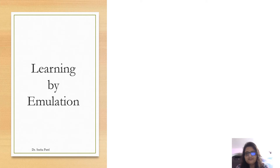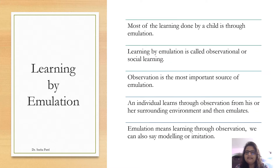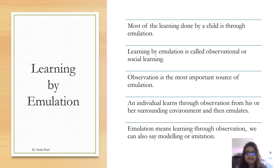Learning by Emulation, through Imitation. This is the very basic method of learning. Most of the learning done by a child is through emulation. Learning by emulation is called Observational or Social Learning. The child observes the environment and the people in the environment accurately, and then imitates them. It is a social learning because the societal rules and regulations have to be followed in displaying the behavior. Observation is the most important source of emulation — if we observe accurately, then we can imitate nicely. An individual learns through observation from his or her surrounding environment and then emulates. Emulation means learning through observation.